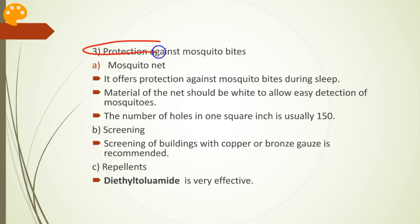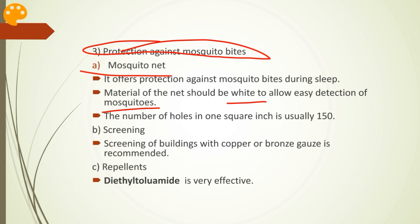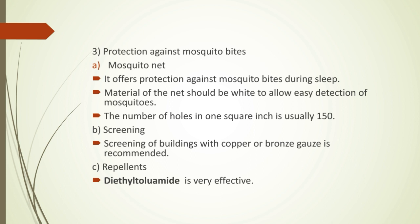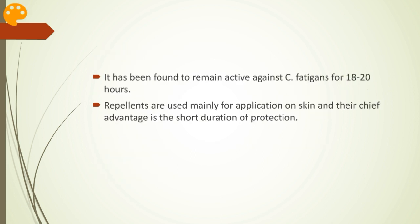Coming to protection against mosquito bites. The first method is the mosquito net, which offers protection during sleep. Materials of the net should be fine enough to allow easy detection of mosquitoes, and the number of holes per square inch is usually 150. Screening of buildings with copper or bronze gauze is also recommended — it is costly but gives excellent results. Lastly, repellents such as diethyl toluamide are very effective, remaining active against Culex fatigans for 18 to 20 hours. Repellents are mainly used for skin application, though their chief limitation is the short duration of protection.